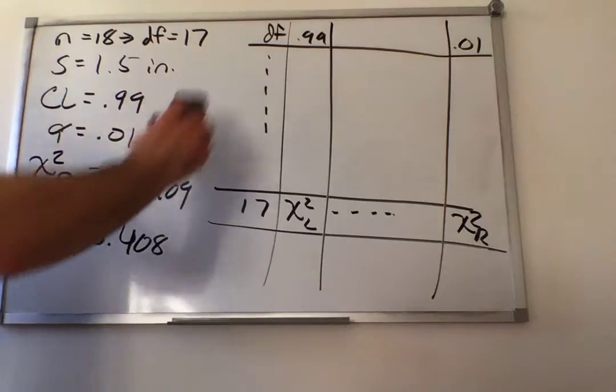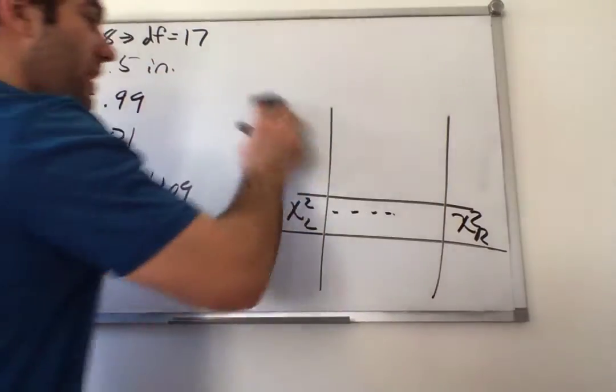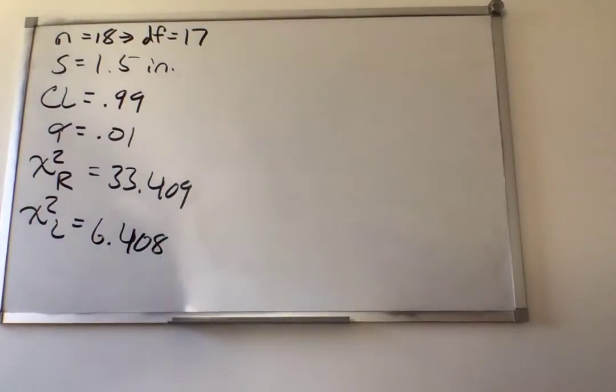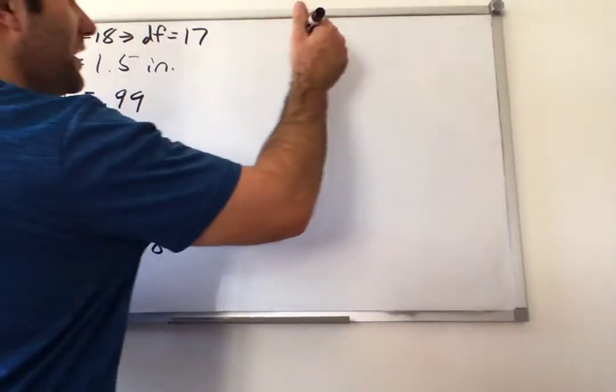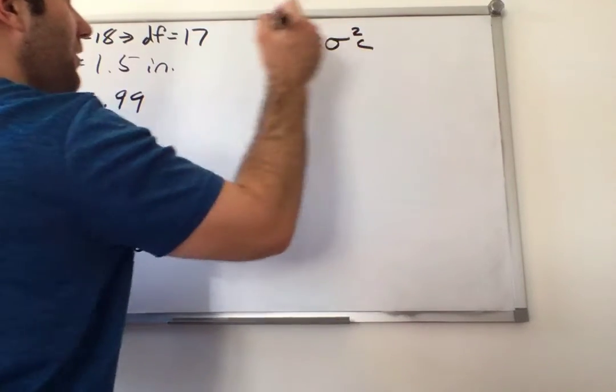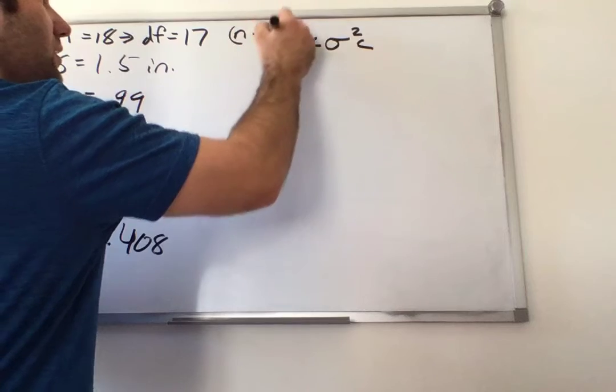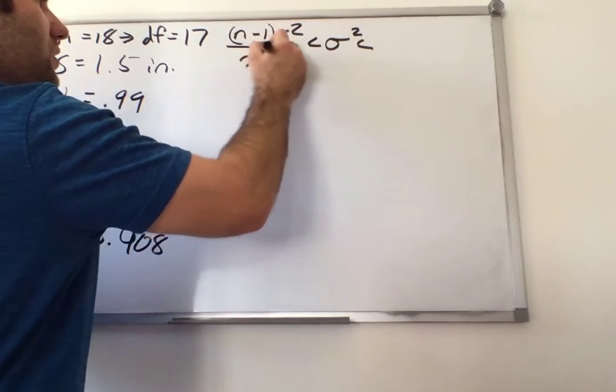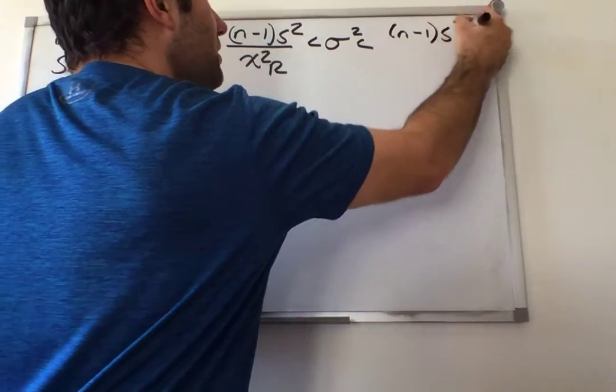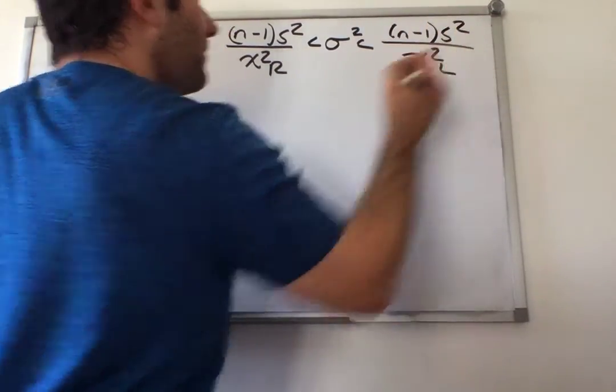Now that we have all of our relevant information, we can construct the confidence interval for the variance, which is n minus 1 times s squared divided by the chi-squared right value, and n minus 1 times s squared divided by the chi-squared left value.